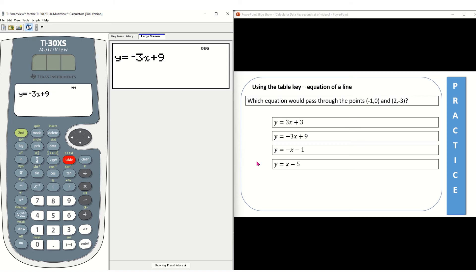The third answer choice y equals negative x minus 1. Let me clear the 9 and I'm going to hit enter. I want it to do the same exact thing. Ask, and there we go. When x equals negative 1, y equals 0. Bam! First ordered pair. When x equals 2, y equals negative 3. Oh there is the second ordered pair and there is my answer. The answer for this problem is the third choice, y equals negative x minus 1.